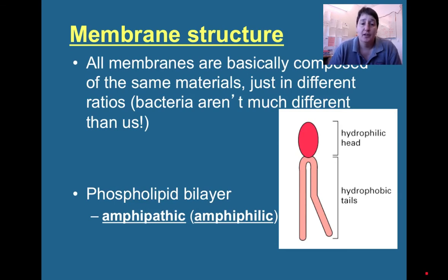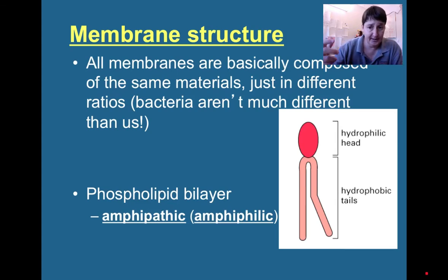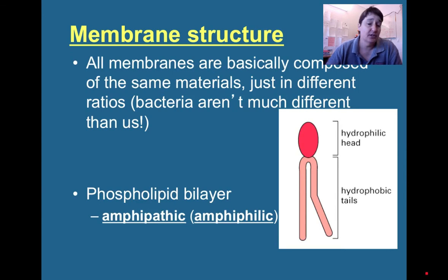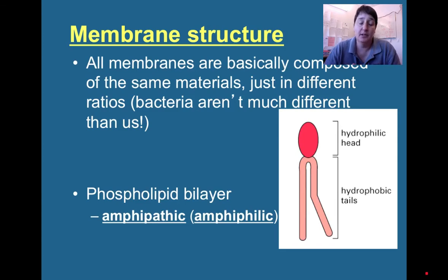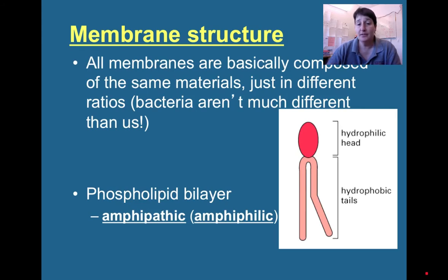A phospholipid is a two-part molecule. It has a hydrophilic phosphorylated head, which wants to interact with water, and hydrophobic lipid tails that want nothing to do with water. So these molecules are called amphipathic or amphiphilic—meaning they have two different desires, one part hydrophilic and one part hydrophobic. Membranes are made out of these structures, and the beauty of this is that they can self-generate a membrane without any additional energy—they will generate themselves spontaneously.